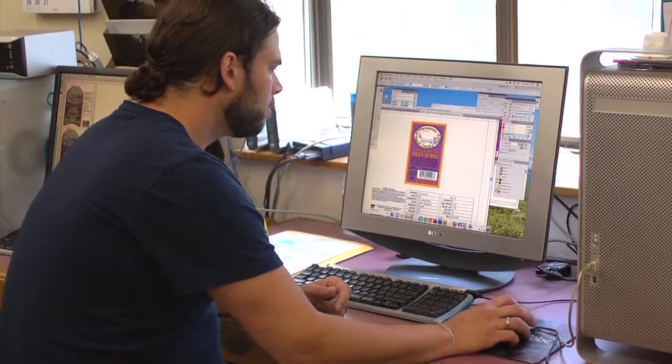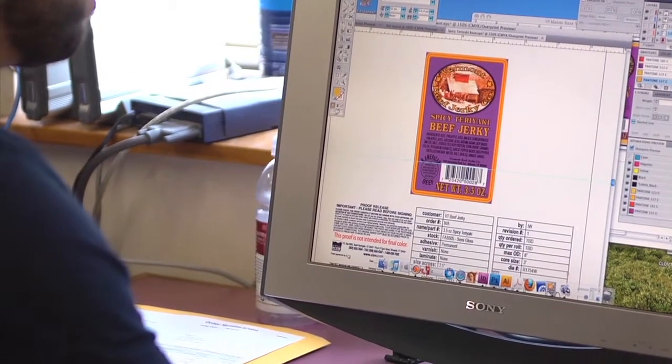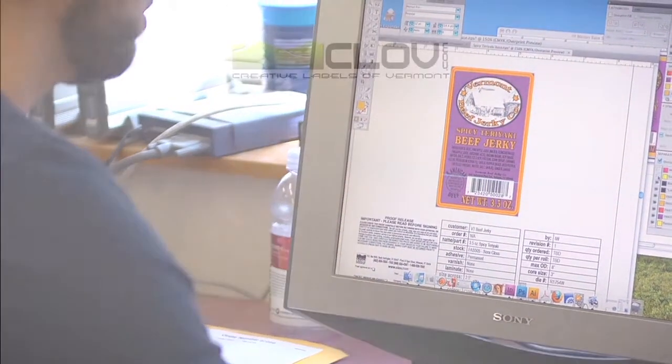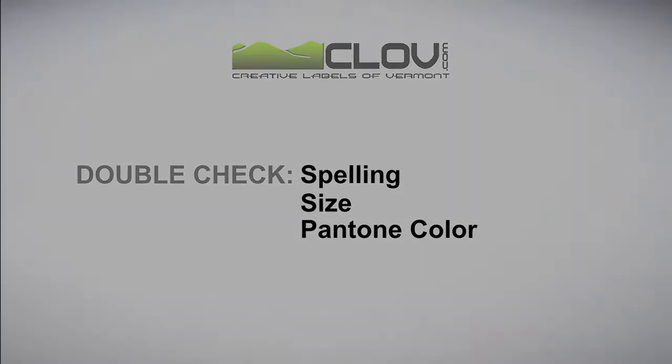Now your electronic art is manipulated by our graphic designers to work with the roundness of the die cutter. From there, a proof will be sent back for your approval. Please double check the spelling, size, Pantone color indicated, and all of the other information provided on the proof. Once you are satisfied, send it back with your approval and we can start the printing process.